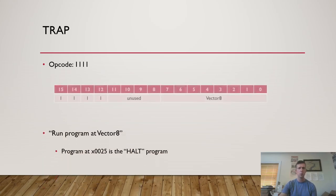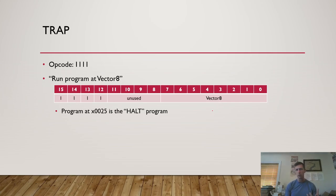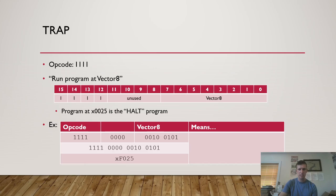Let's look at the TRAP instruction. The opcode is 1111. We'll look at this more in depth in unit three, but briefly: TRAP runs a program whose starting address is specified by bits 7 through 0 — the vector. There are several trap routines available on the LC3. If we specify hex 25 as the vector, that's effectively our HALT program. So TRAP 25 runs the HALT routine, which pauses the LC3. The hex value F025 in LC3 memory means halt the processor.